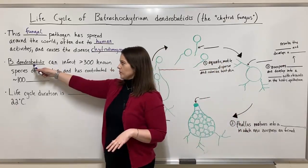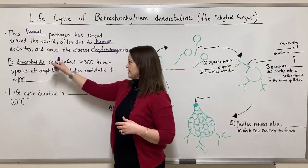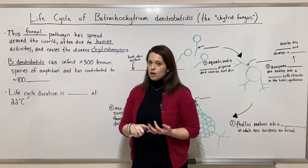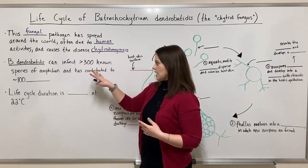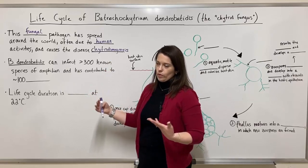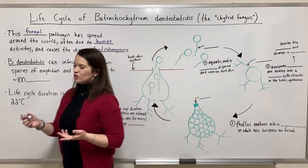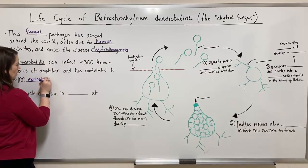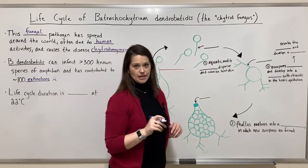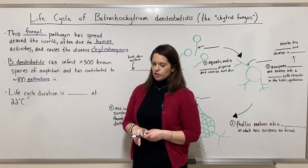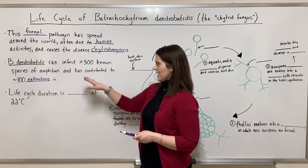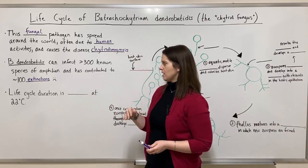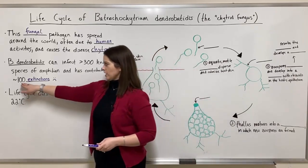In particular, this first one that was discovered — Batrachochytrium dendrobatidis — can infect over 300 known species of amphibians: lots of frogs, toads, salamanders, caecilians, and probably more species than we even know. It has contributed to approximately 100 amphibian extinctions. I read a paper published in 2019 indicating approximately 90 extinctions known at that time, and of course it's been a few years since then, so this number keeps going up.